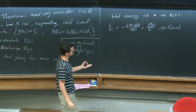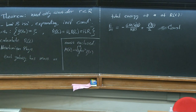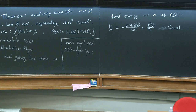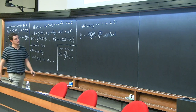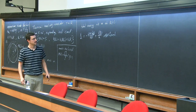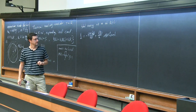This constant depends on my initial conditions — in particular, it depends on R-naught. R at T-naught is defined to be R-naught, so where I chose this coordinate at the initial time affects E.